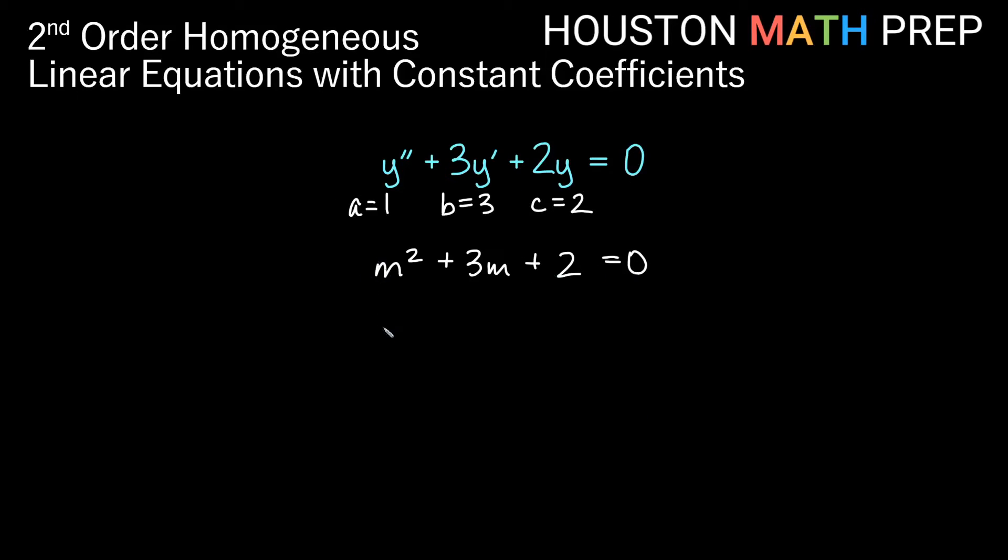Now this is easy. This actually factors quite nicely. I get something like m plus 1 times m plus 2 when I factor this. And if we set each factor equal to zero, we'll get m plus 1 equals zero and m plus 2 is equal to zero. Then we'll get that m is negative 1 and m is negative 2 for this algebraic equation.